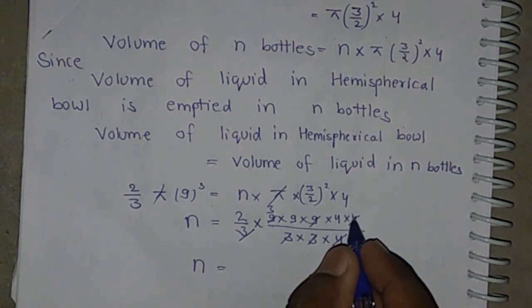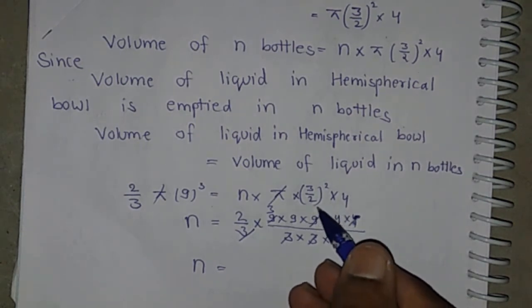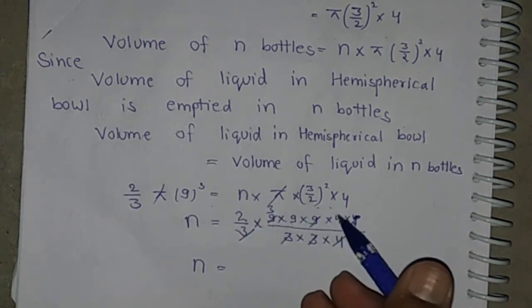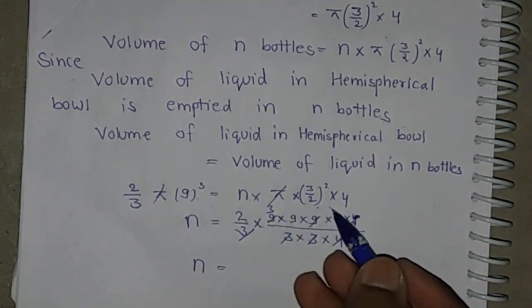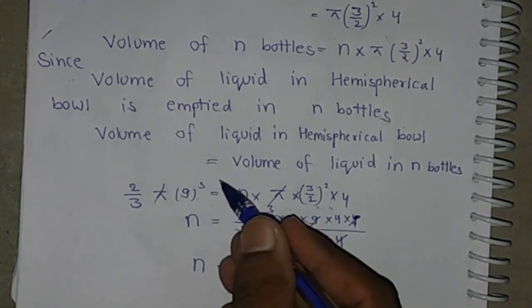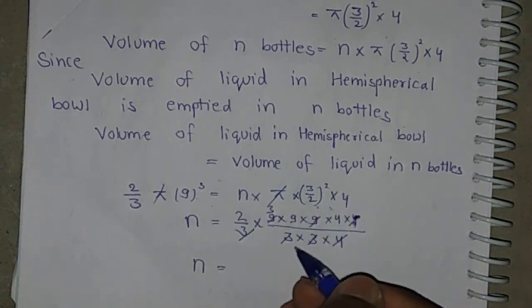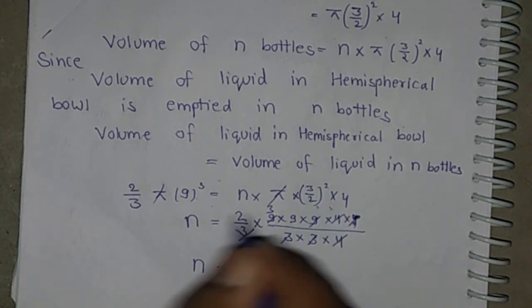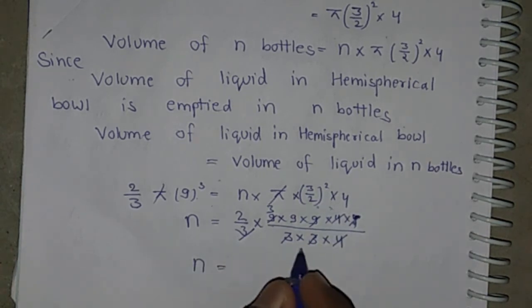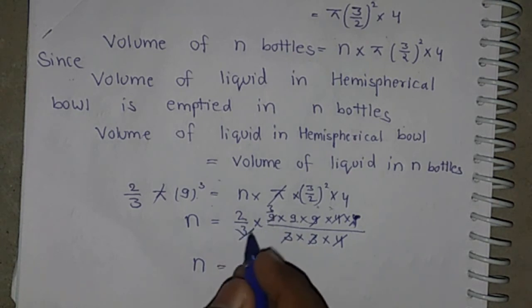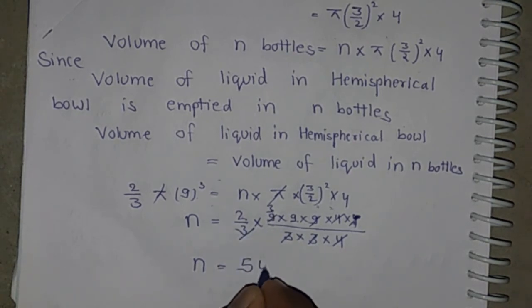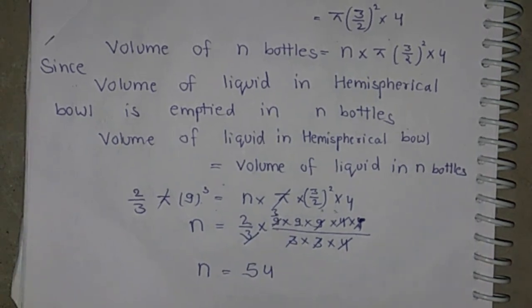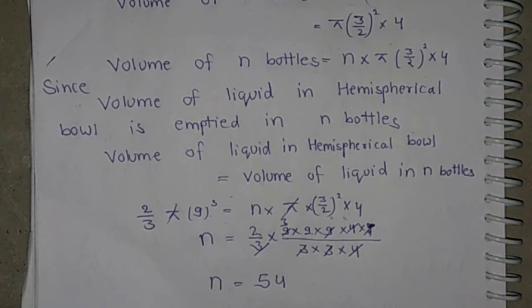Solving: 9 × 9 × 9 × 4 divided by 3 × 9 × 4 simplifies step by step, giving N equal to 54. So 54 bottles are needed to empty the bowl.